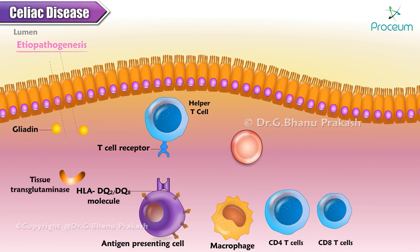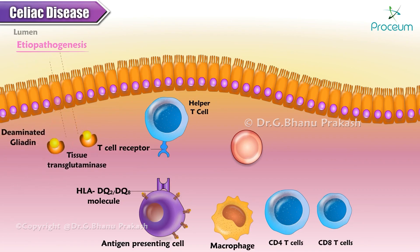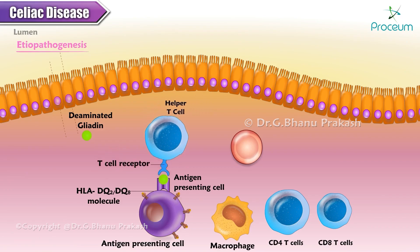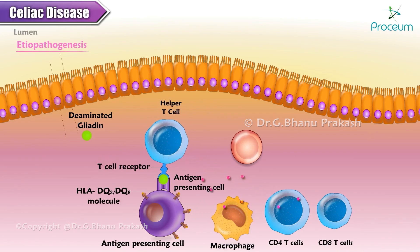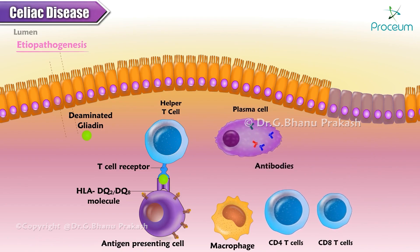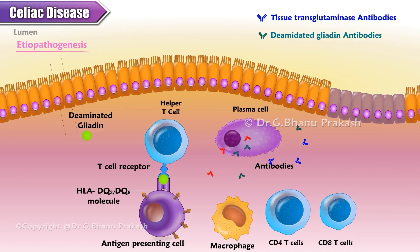Upon intake, gliadin is deaminated by tissue transglutaminase, and the deaminated gliadin is then able to bind to heterodimers of HLA-DQ2 and HLA-DQ8 present on antigen-presenting cells of the lamina propria of the intestines. This binding leads to activation of macrophages, CD8 T-cells, and CD4 T-cells, which further release cytokines. CD4 T-cell activation leads to the release of abnormal antibodies, including antibodies to tissue transglutaminase, antibodies against deaminated gliadin, and anti-endomyseal antibodies.